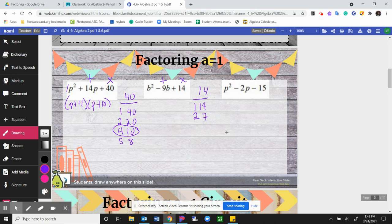Now it needs to multiply to get a positive 14. So what that means is that both numbers could be positive or both numbers could be negative, okay?